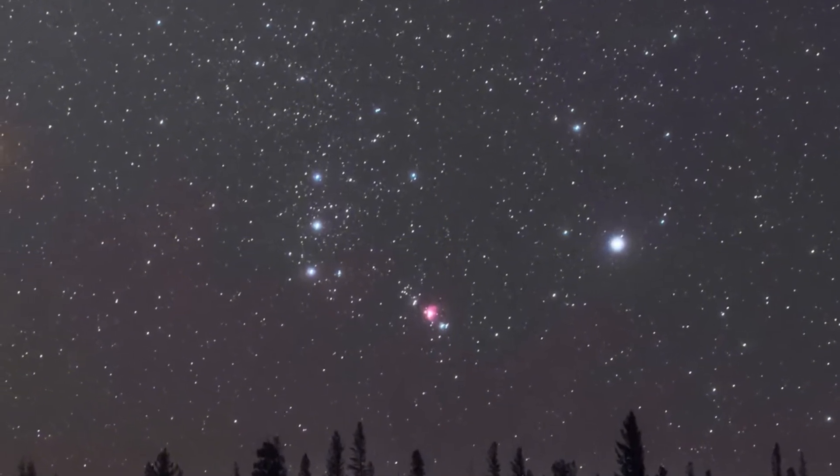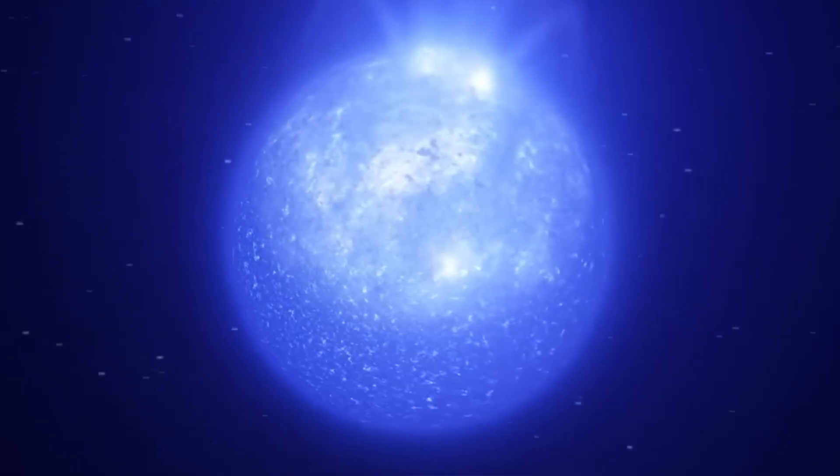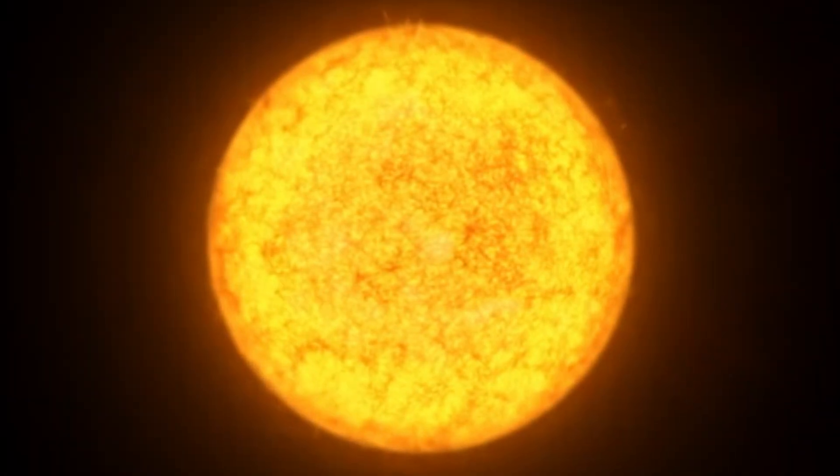Next is the red supergiant, Antares, which is the brightest star in the Scorpius constellation. Antares, often referred to as the heart of the Scorpion, is the 15th brightest star in the night sky. It is 550 light-years away from our Earth.